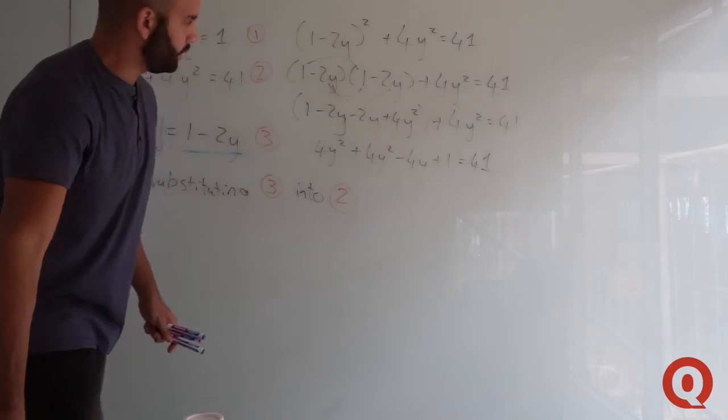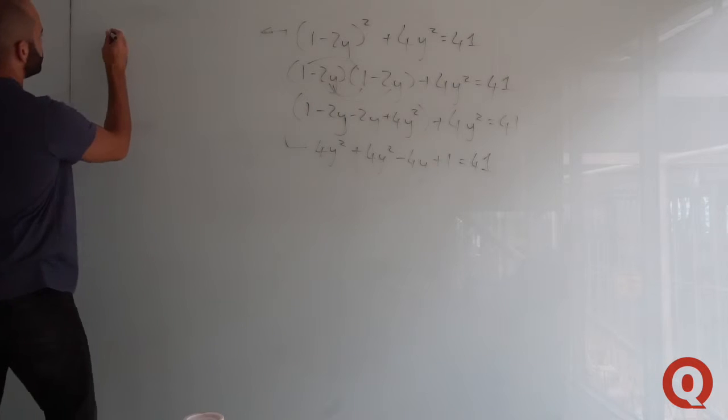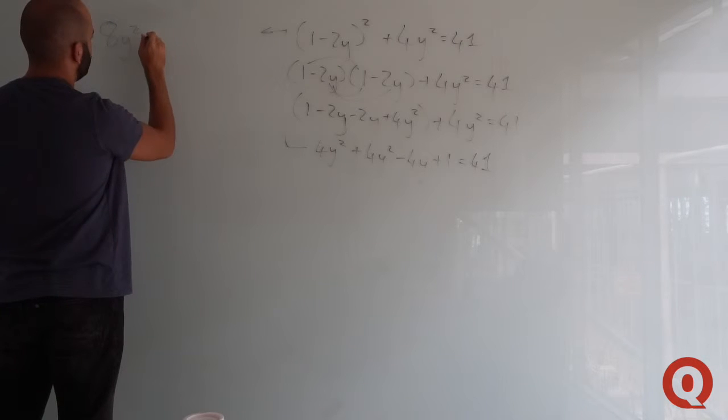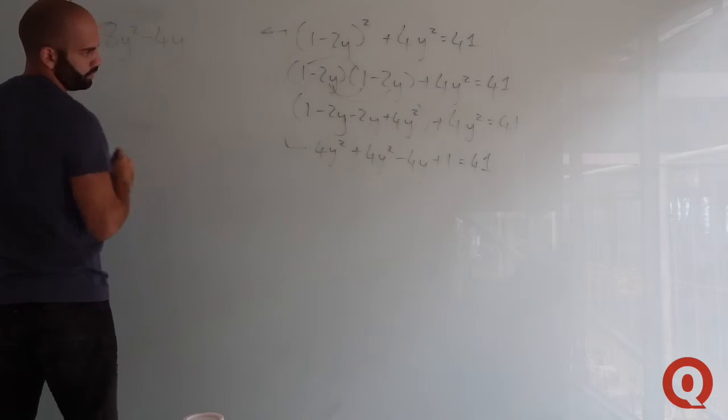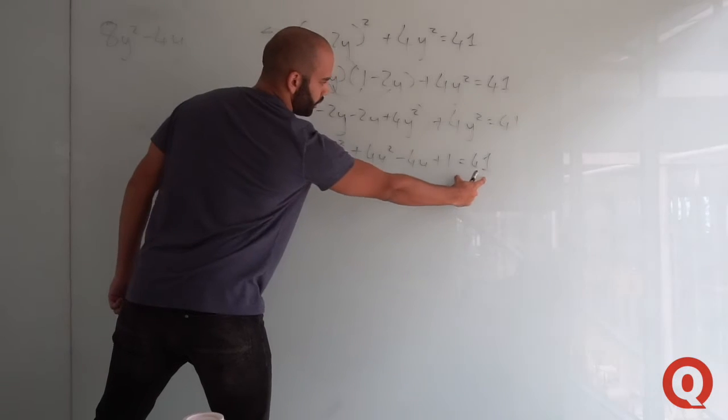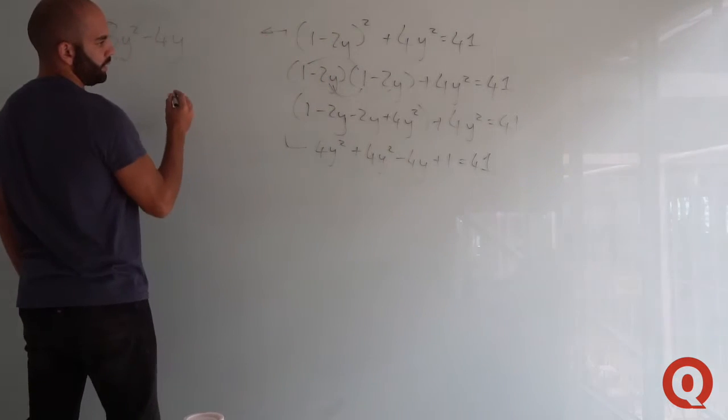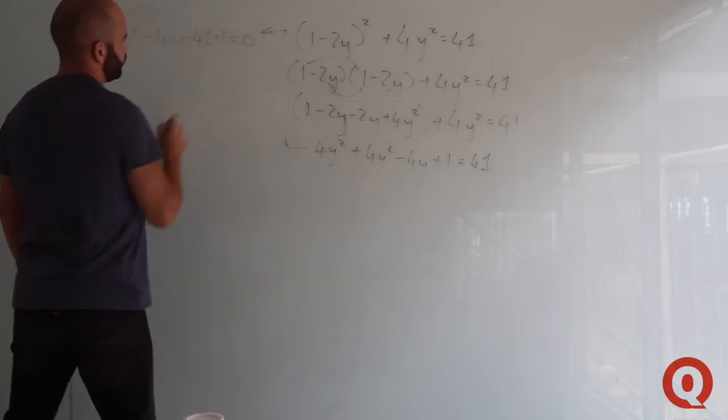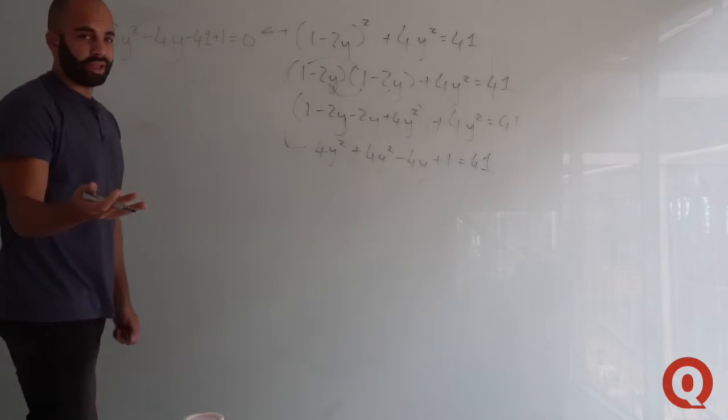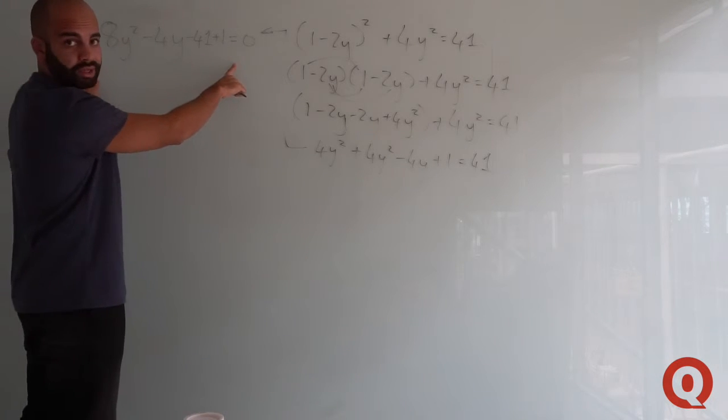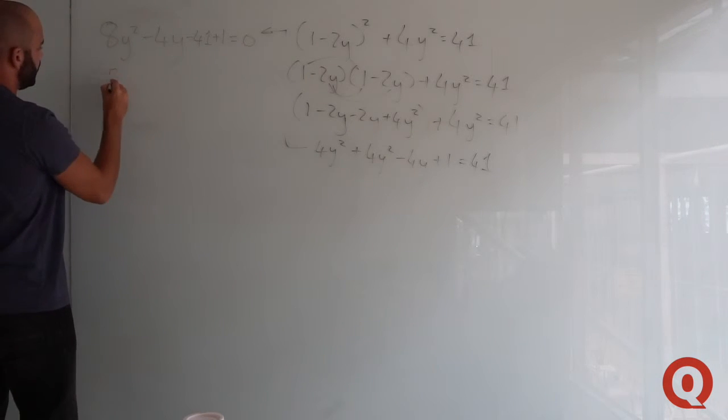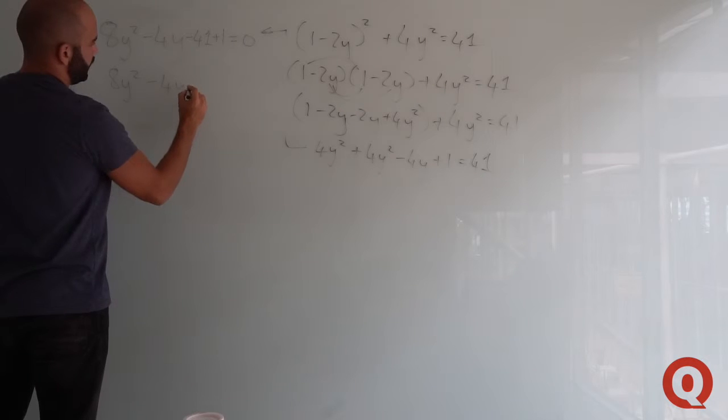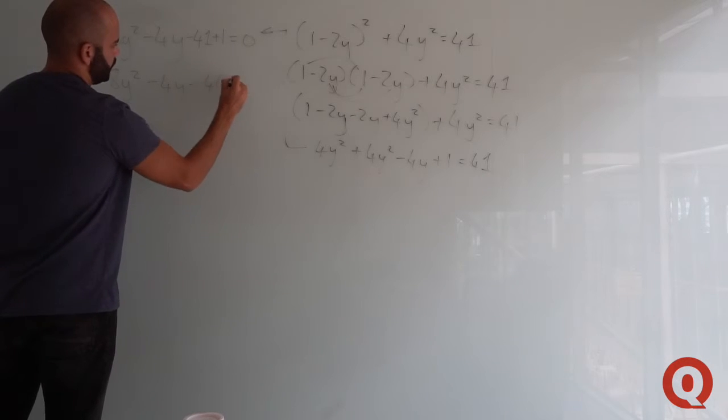Taking this here, you've got 8y squared minus 4y. Bringing 41 across to the left, I have minus 41 plus 1 equals 0, because we want to get it into standard form for a quadratic expression. You should have 8y squared minus 4y minus 40 equals 0.